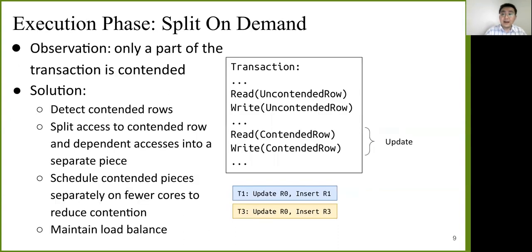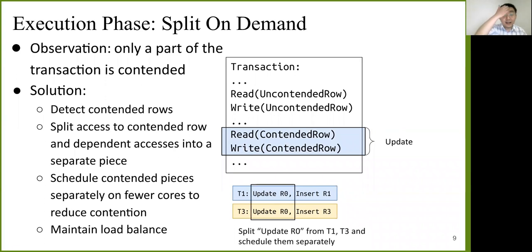In the execution phase, contention can also affect performance. Our observation is that only a small part of the transaction is actually contended. So our solution is to detect contended rows, split the access to contended rows and its dependent access into a separate piece, and then we schedule these contended pieces separately and run them on fewer cores to reduce contention. And of course, this scheduling must be done in a way that's load-balanced so that we don't have any load imbalance on the CPU.